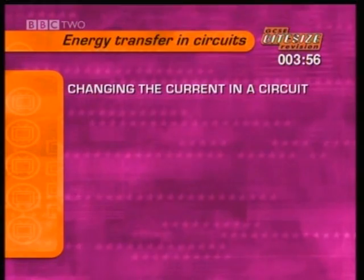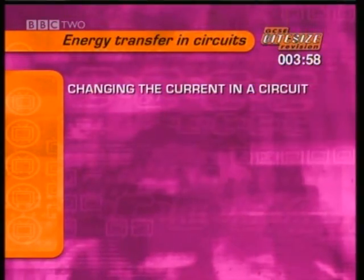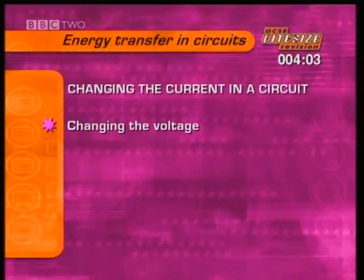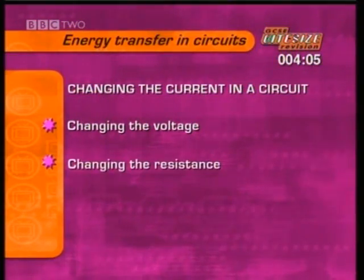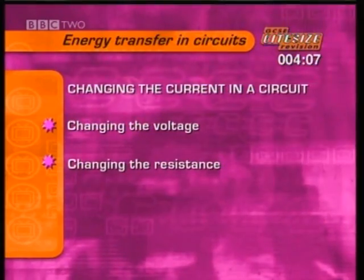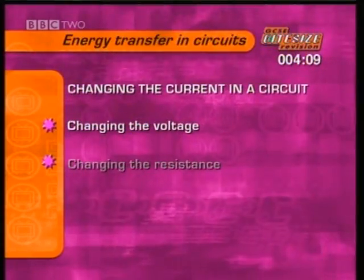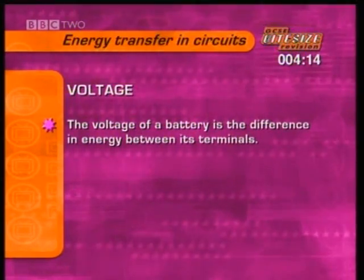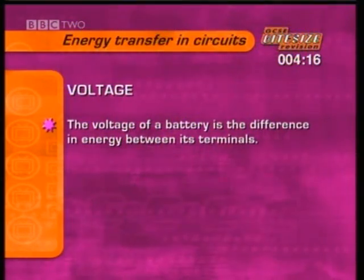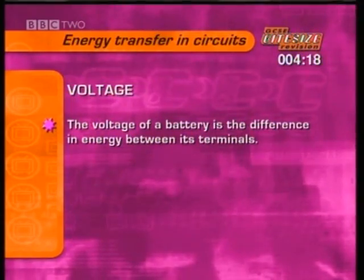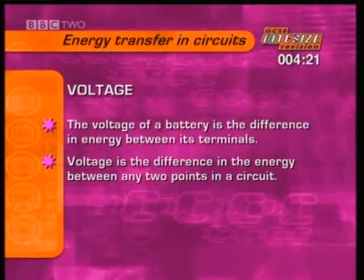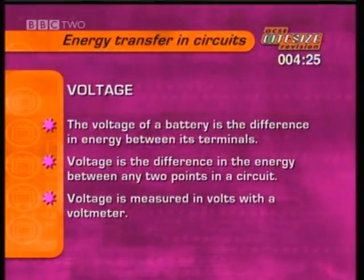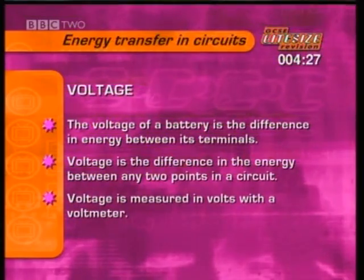Next, we'll look at ways of changing the current in a circuit. The current in a circuit can be changed either by changing the voltage or by changing the resistance. First, changing the voltage. We're most familiar with the voltage in the case of a battery, where the voltage is the difference in energy between its two terminals. In fact, voltage is the difference in energy between any two points in a circuit. Voltage is measured in volts with a voltmeter.